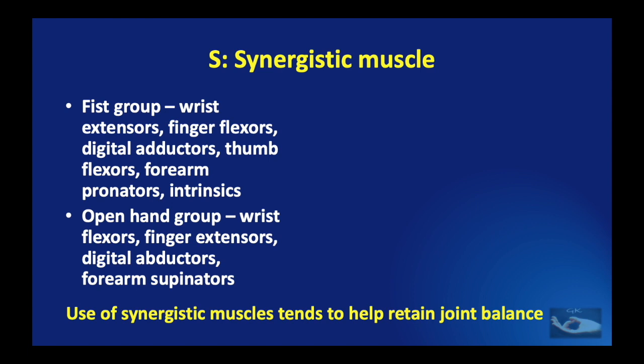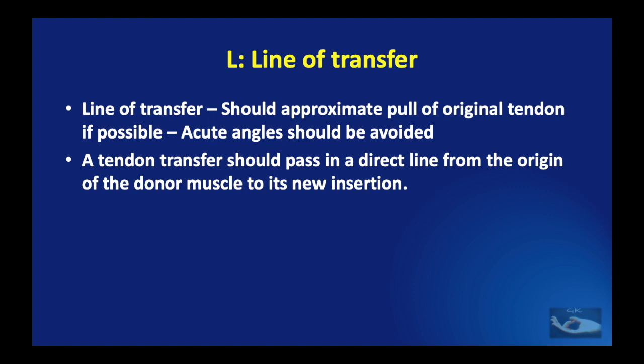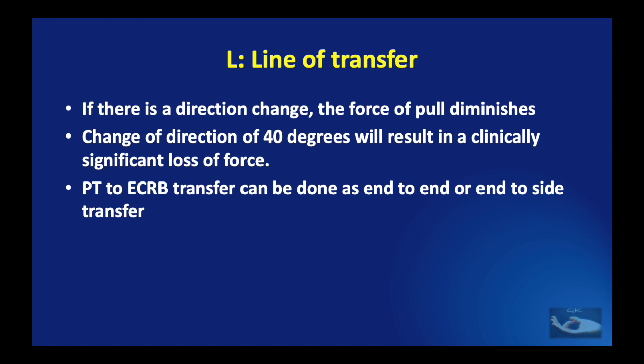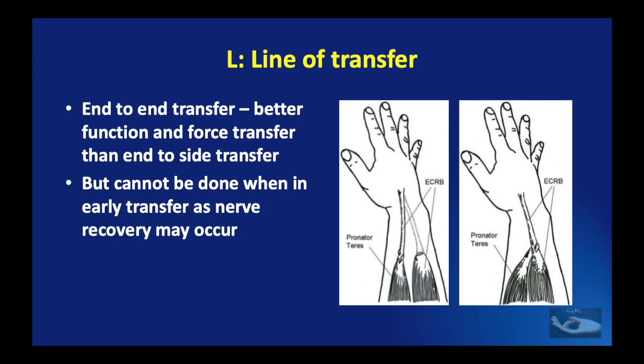The L of our mnemonic APOSTLE stands for the line of transfer. This should approximate the pull of the original tendon if possible, and acute angles should be avoided. A tendon transfer works best if it passes in a direct line from the origin of the donor muscle to its new insertion. If there is a direction change, the force of the pull diminishes — even a change of direction of 40 degrees will result in a clinically significant loss of force. For example, the pronator teres to extensor carpi radialis brevis transfer done end-to-end has better function and force transfer than end-to-side. If a direction change is unavoidable, a smooth structure should be planned to act as a pulley allowing gliding of the transfer tendon.